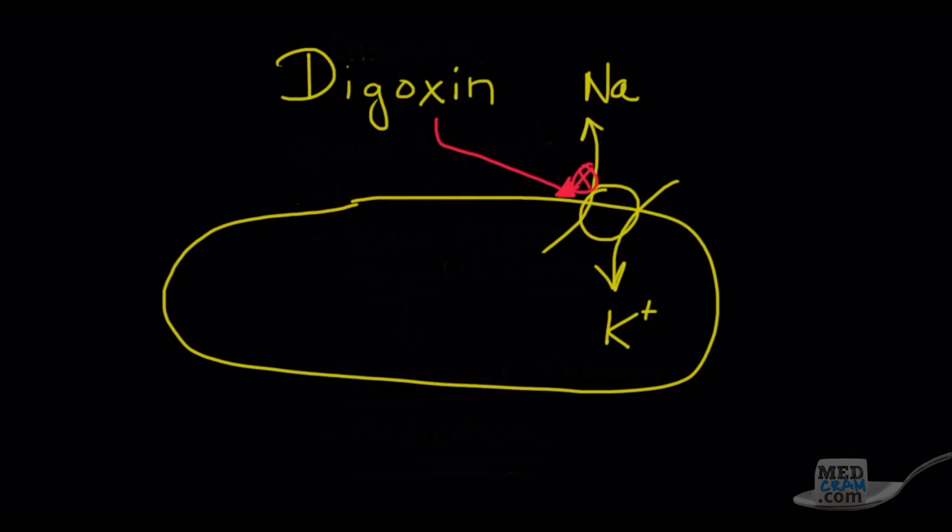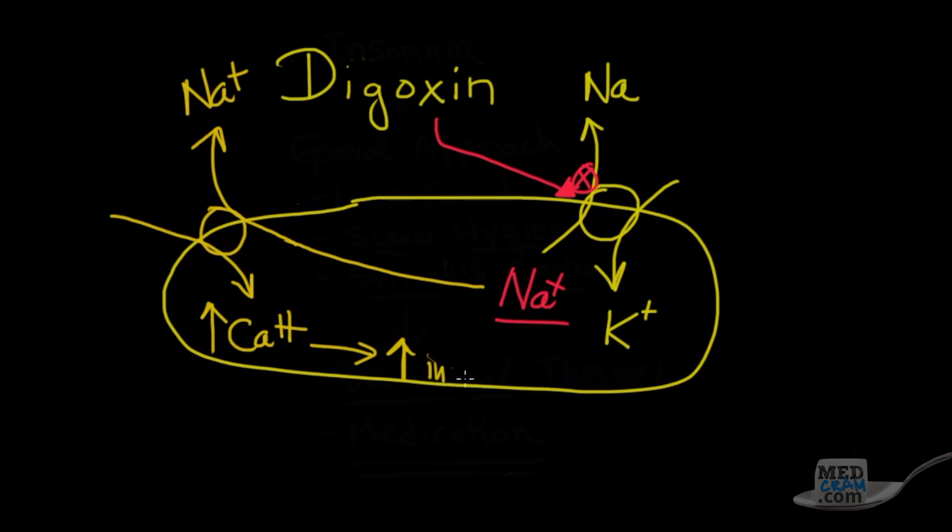As a result, sodium starts to build up inside the cell. There's another way for sodium to get out of that cell, called the sodium calcium exchanger. Here sodium can leave the cell in this direction, and as a result, what comes in is calcium. That increase in calcium because of this blockage of the sodium potassium ATPase leads to increased inotropy, which means the strength of contraction.